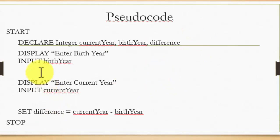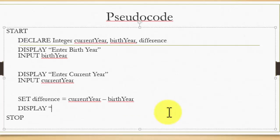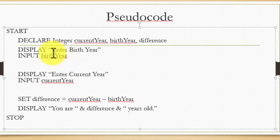So now we have declared a couple of variables, accepted both inputs, and calculated the difference. Now it is time to display the output. We write: display 'You are' followed by a concatenation operator, then difference, then 'years old'. That is my successful output. So here's the input, here's the process, and here's the output — that's the pseudocode.